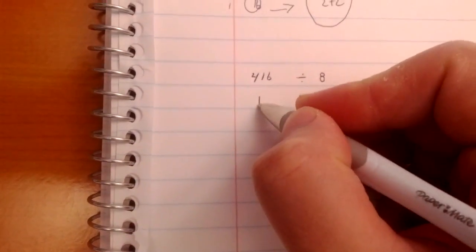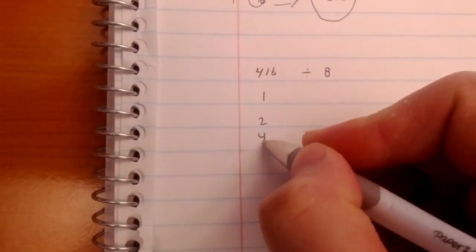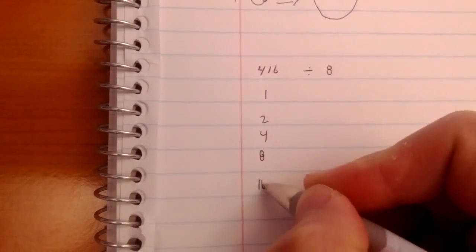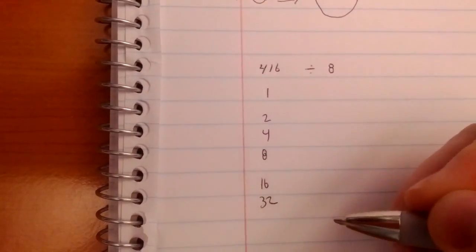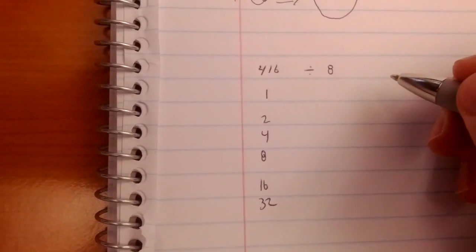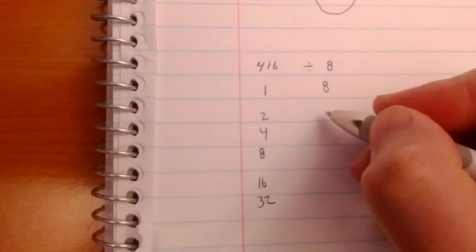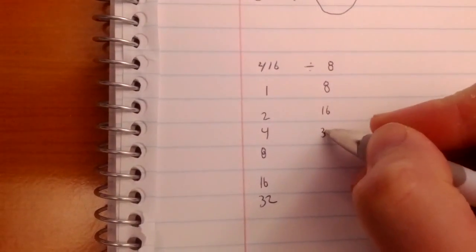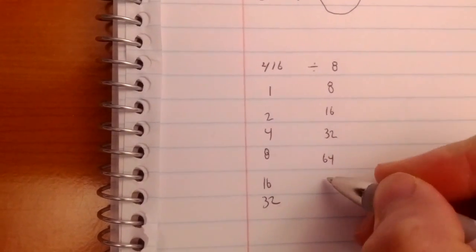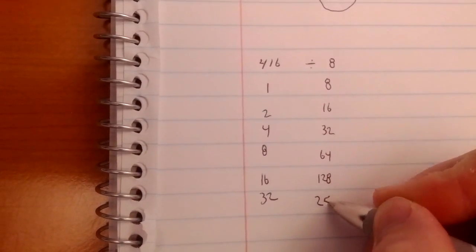It also works for division. Let's say 416 divided by 8. And this is the way you do division: 32, that should be enough. And then you just start doubling over here like you have been: 16, 32, 64, 128, 256.